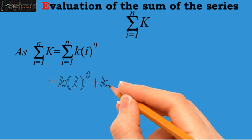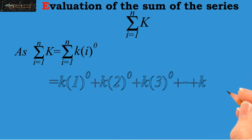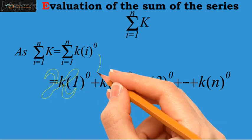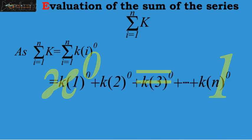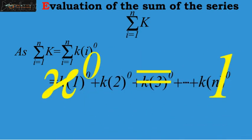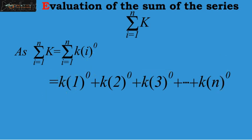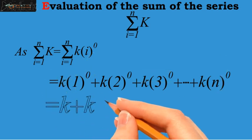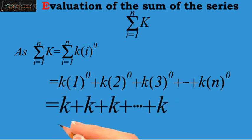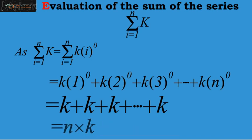Now, by the definition of summation, we have, as we know that any number having exponent 0 is always equal to 1. So, using this, we have, as this k runs up to n times, so we have n times k.